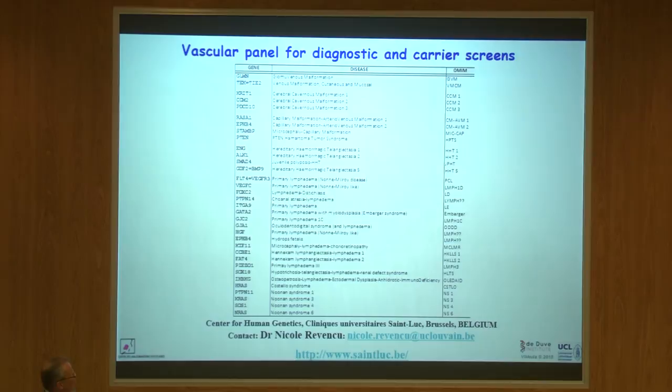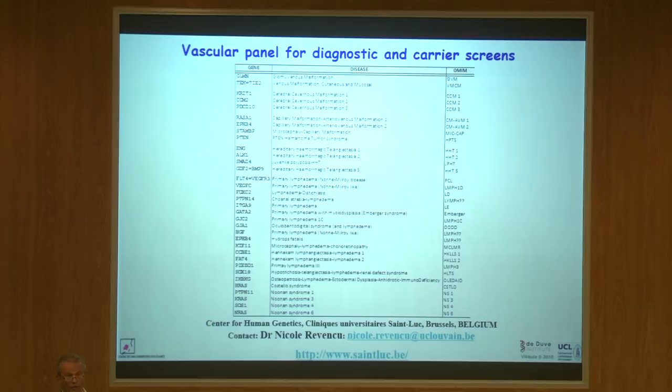What is already possible is genetic screening. The panel we use in Belgium is available to any hospital or clinician, and we screen all known lymphedema genes at once, so a person can know whether they fall into the 25 percent category with a known genetic cause or the 75 percent without one.